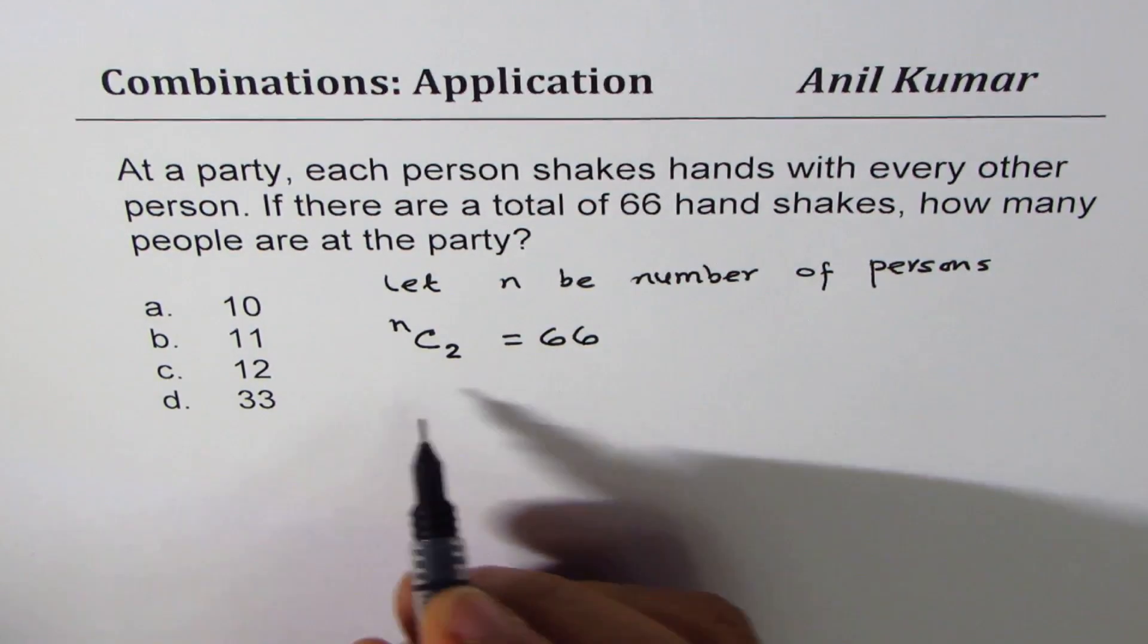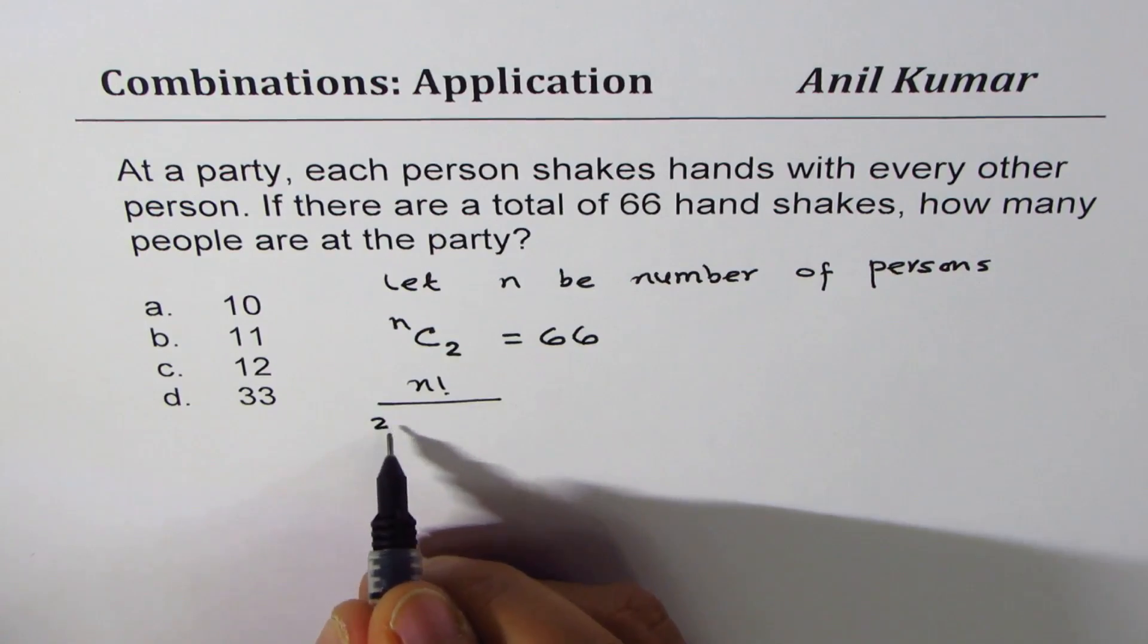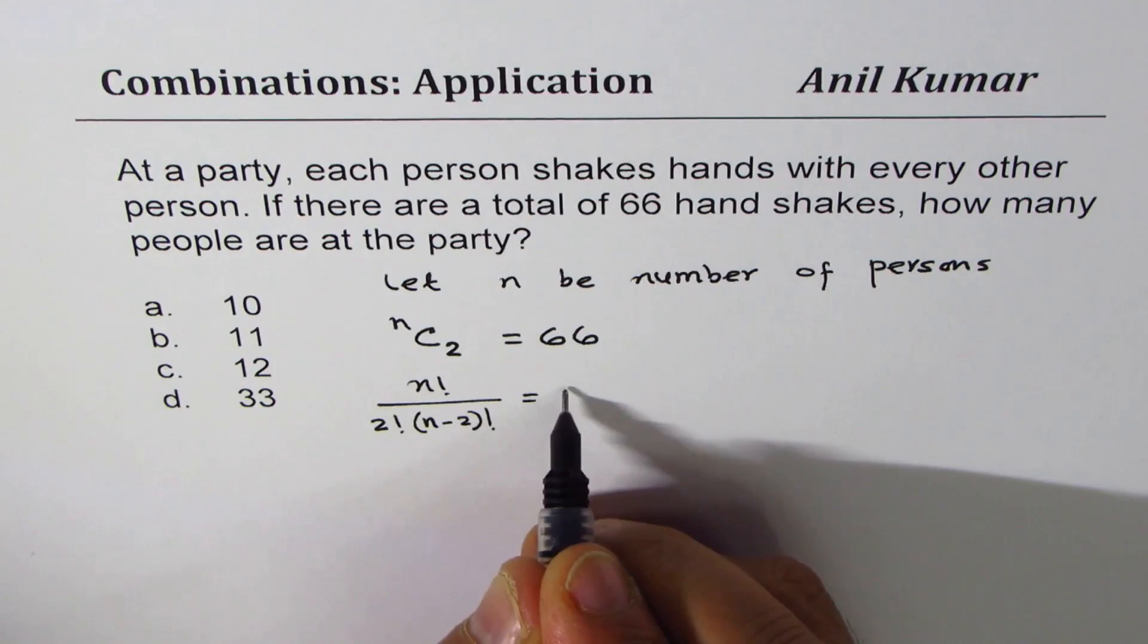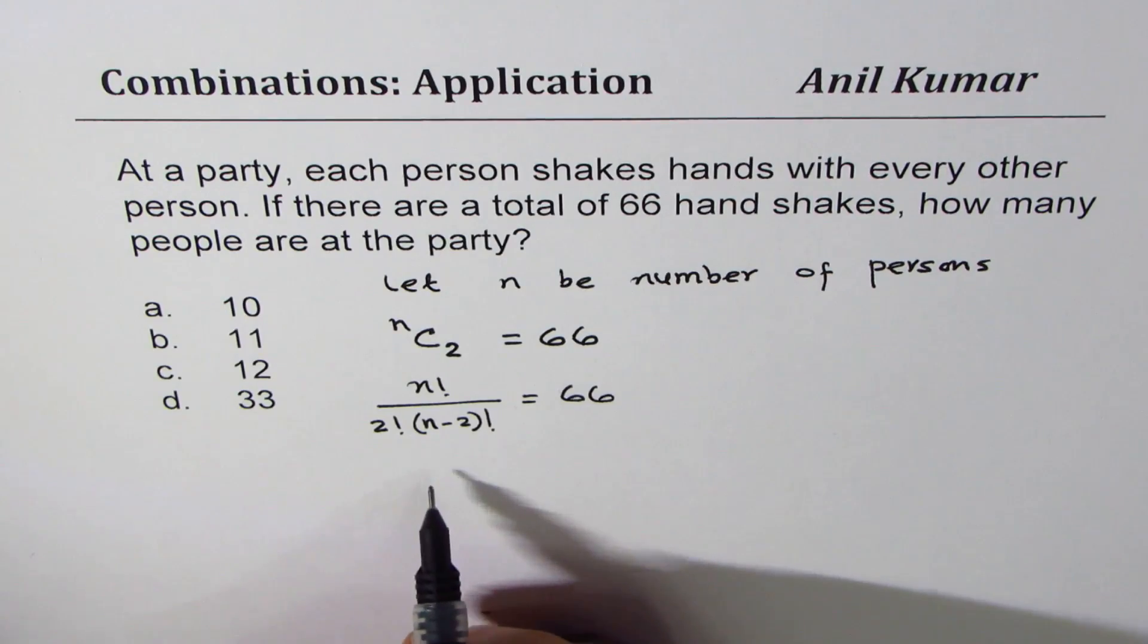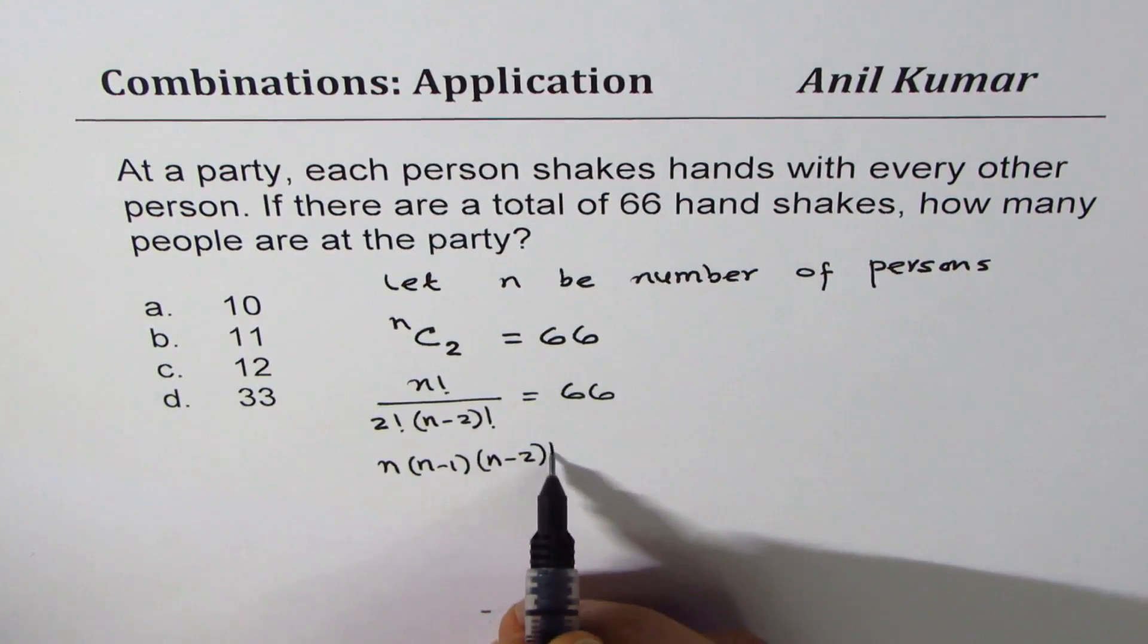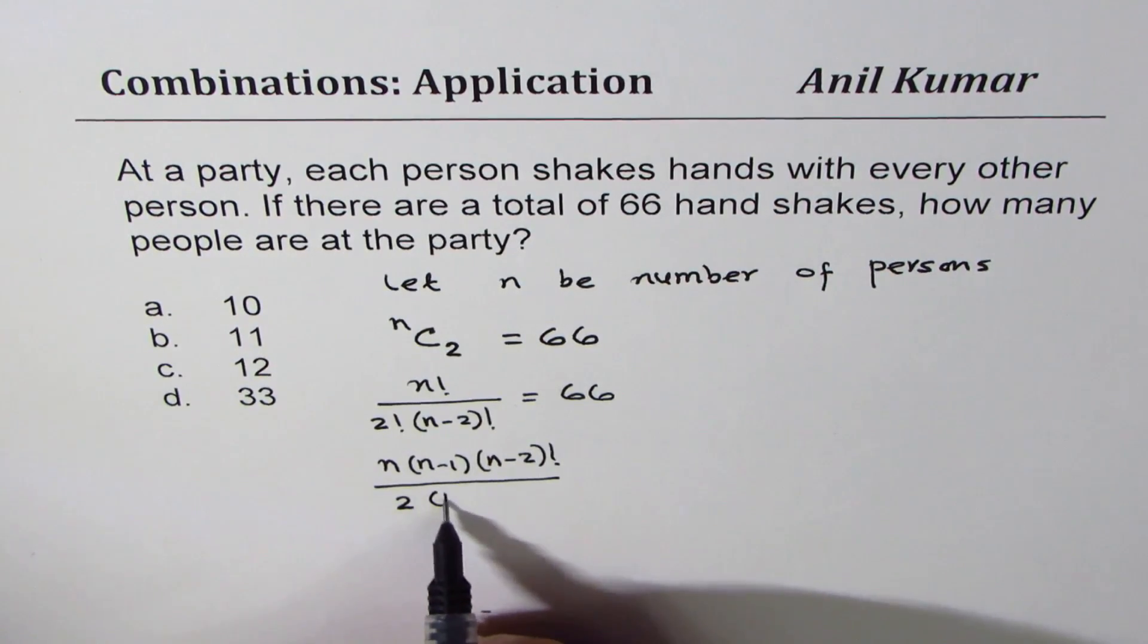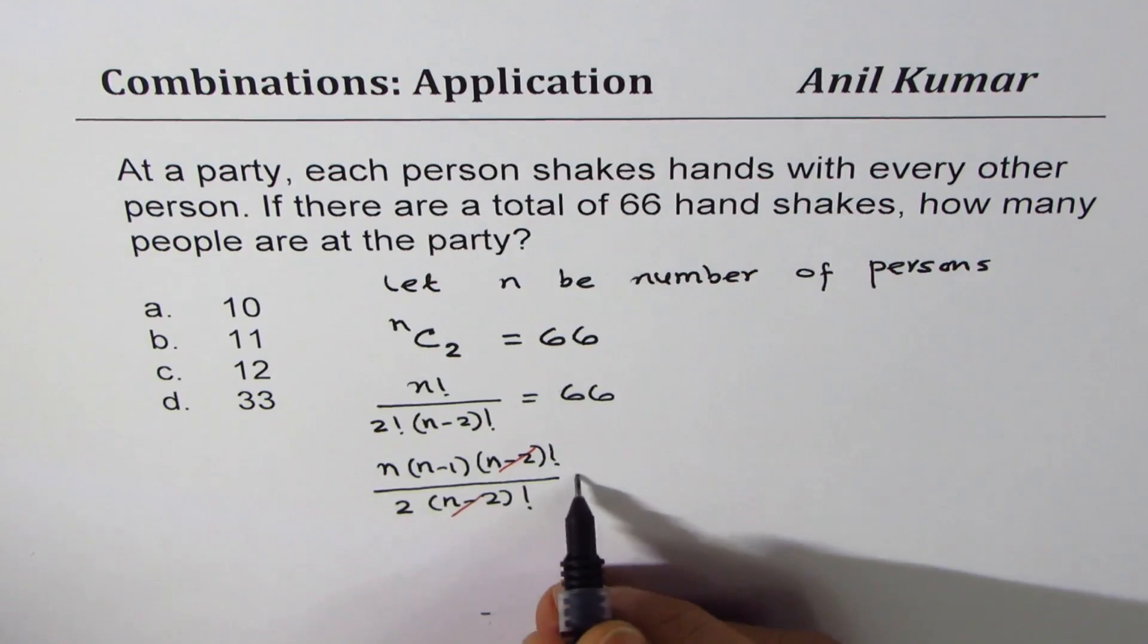Now, nC2 is n factorial over 2 factorial times n minus 2 factorial. And that is 66. So we could write this as n times n minus 1 times n minus 2 factorial over 2 factorial, which is 2 times n minus 2 factorial. So n minus 2 factorial cancels out. All this is equal to 66.